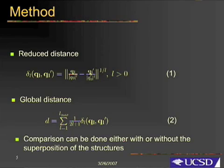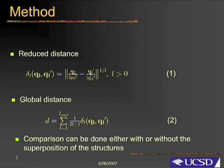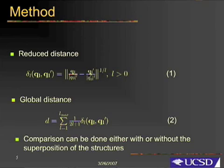Using physical principles, one can use as a distance between two multipoles of a given rank L the function given in formula 1. The global distance between two proteins can then be defined as a sum of distances over all multipole ranks desired in the representation.